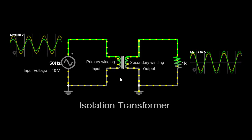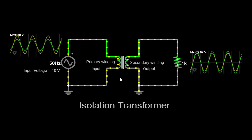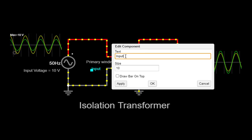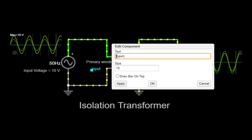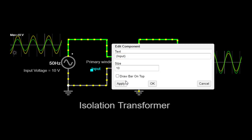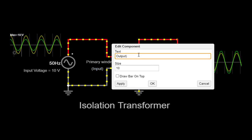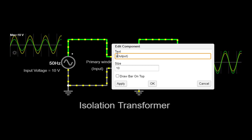Ground loop elimination: Ground loops occur when multiple devices or systems share a common ground connection, resulting in unwanted circulating currents. Isolation transformers break the ground loop path, effectively eliminating these circulating currents and minimizing the risk of electrical noise and interference.